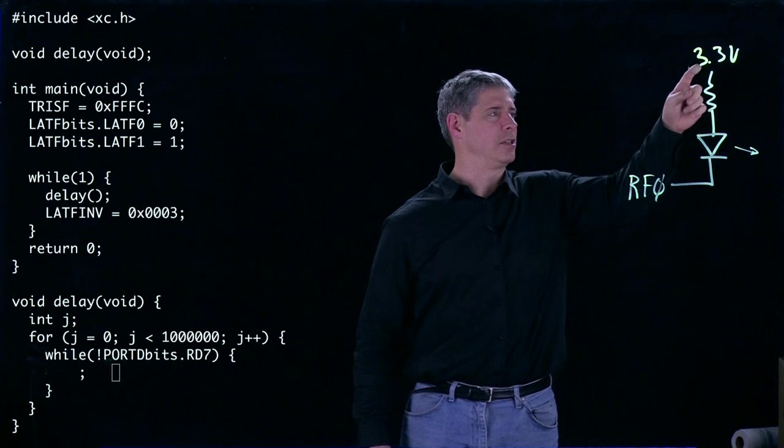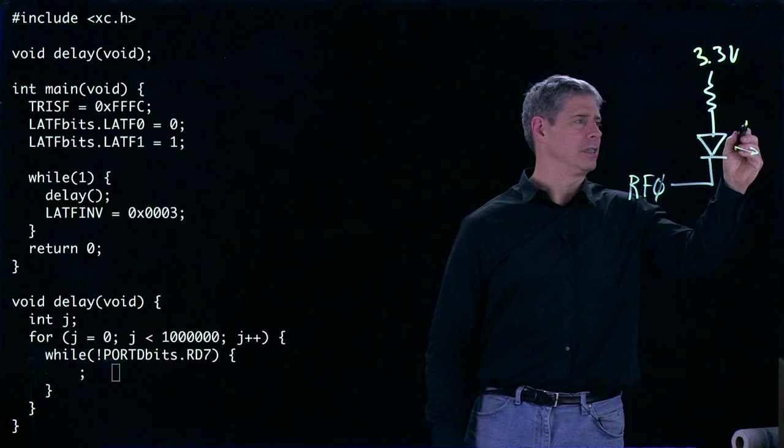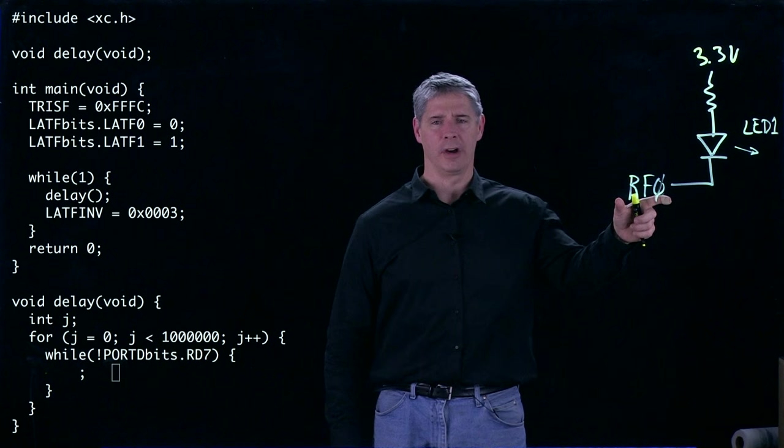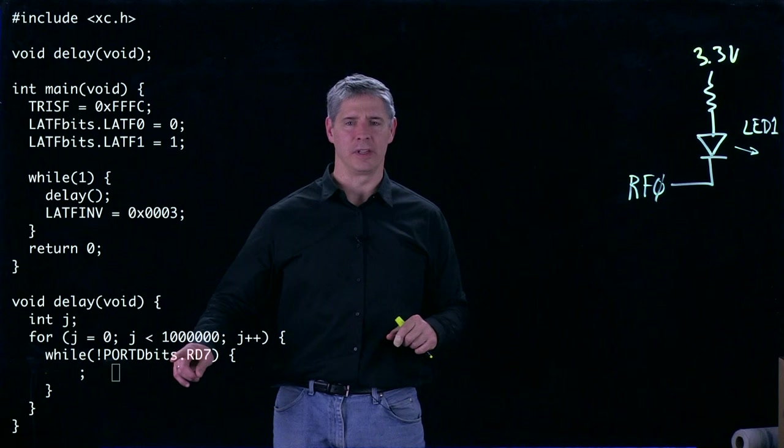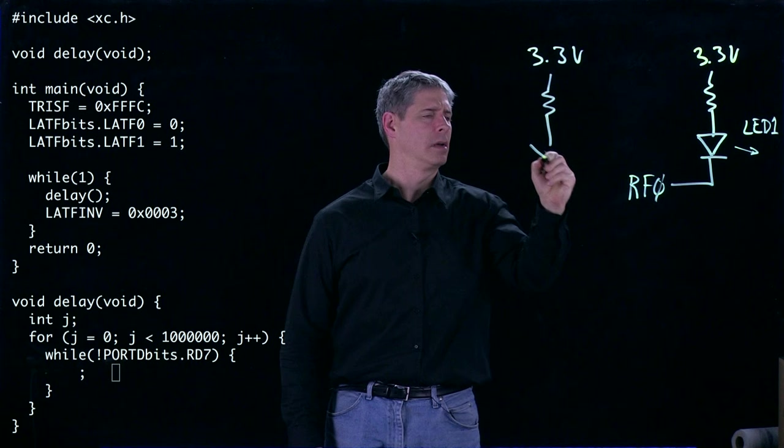Now if RF0 is 3.3 volts, then no current is going to flow and the LED is off. If RF0 is low at ground, then current flows through the resistor, through the diode, the LED lights up. And this is LED1. LED2 is the same, except it's RF1 that controls that LED. And now here with RD7, that's defined as a digital input, and that's associated with the user button. And the way the user button works is this.